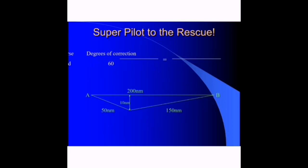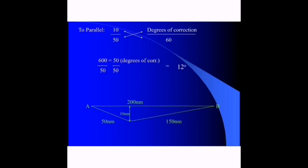For our problem, to determine the parallel track to follow, we have miles off course which are 10 miles over miles traveled which is 50, and degrees of correction over 60. We cross multiply and determine that we have 12 degrees to get back to flight parallel. This is the track error.